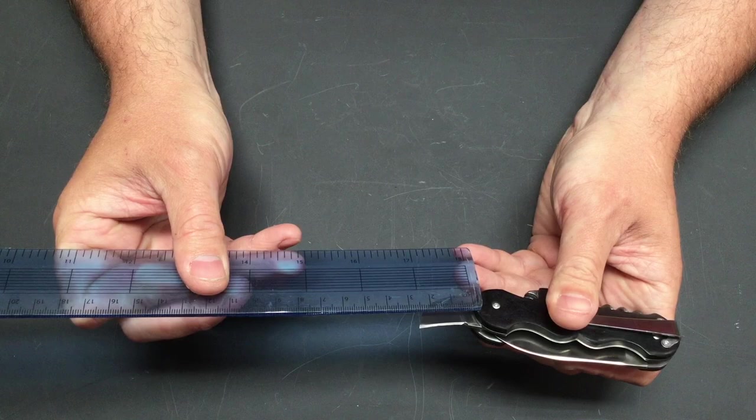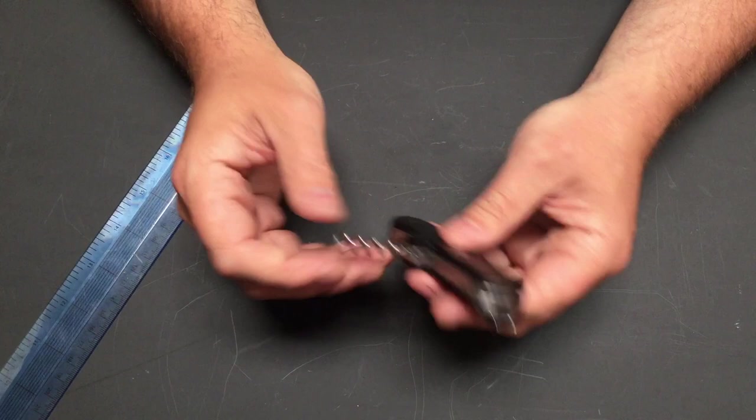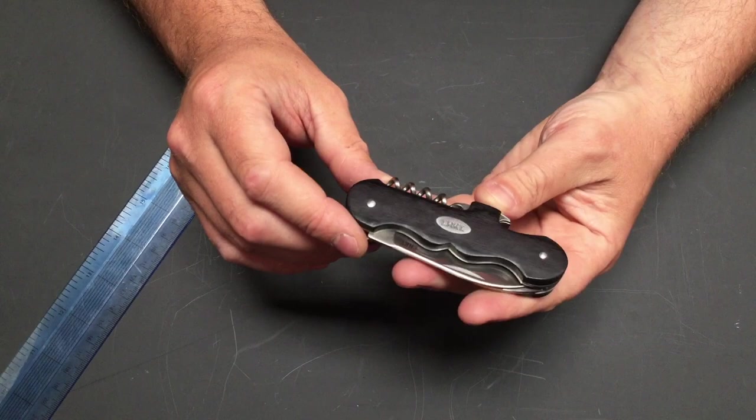But the same slip joint snap shut. Corkscrew, we all know what a corkscrew is, very traditional. Can't really say a lot about a corkscrew. Big deep carry clip. It's quite classic looking, the silver and the pakkawood on it.